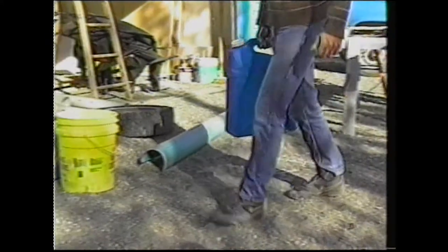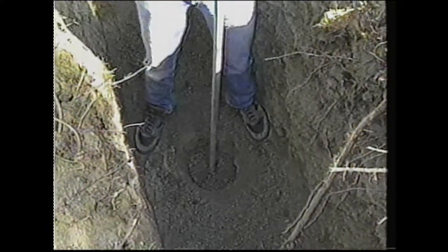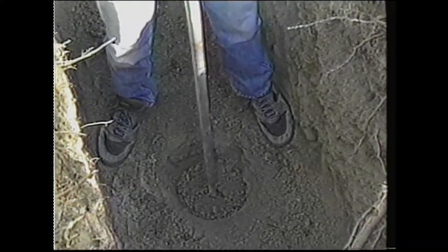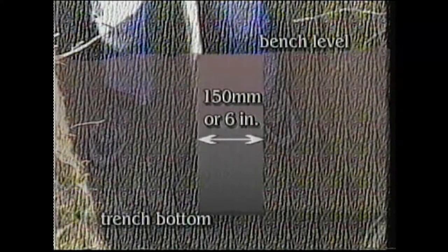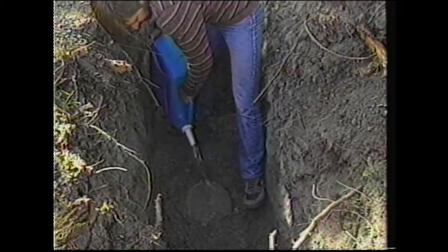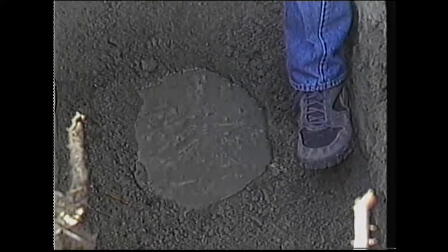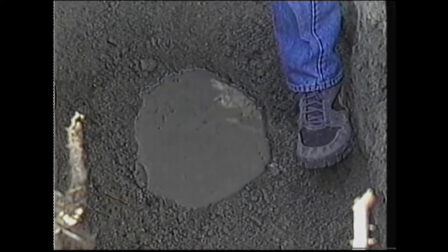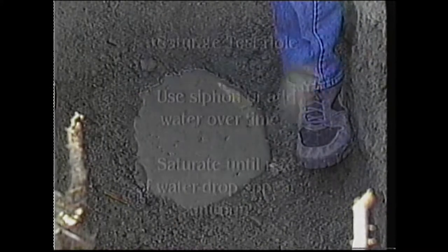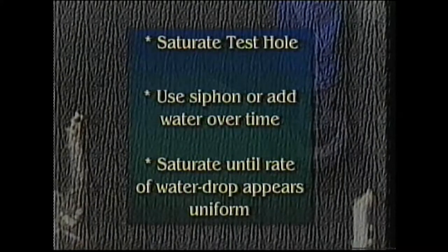All you need at this point is a bit of clean gravel and some water. For the sake of convenience, you may wish to use the previously dug test pit to do your PERC test. This is accomplished by digging a small bench off the pit, from which you dig or bore a 150 millimeter or six inch diameter hole to the bottom of the proposed absorption bed or trench. The test hole must be soaked to simulate the ground conditions expected when your absorption bed is in operation. Some people construct a siphon system to constantly add water to the hole over a period of time. If the soils are tight, you may have to refill the hole many times over a long period to guarantee soaking of the surrounding soils. Keep adding water until the rate of drop appears uniform.